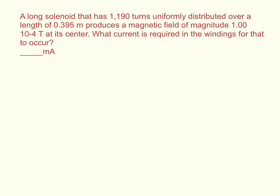A long solenoid that has 1,190 turns uniformly distributed over a length of 0.395 meters produces a magnetic field of magnitude 1 times 10 to the negative 4th tesla at its center. What current is required in the windings for that to occur?